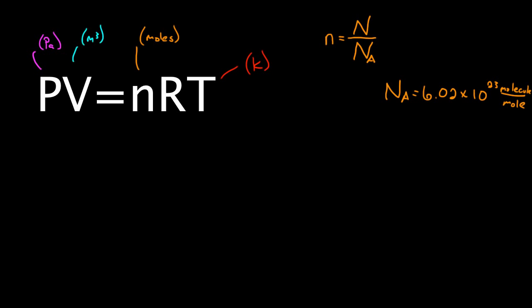And if you choose these units, this R, this gas constant, R is called the gas constant. And it has a value, R has a value of 8.31 joules per mole kelvin. That's the gas constant, R, with these units.